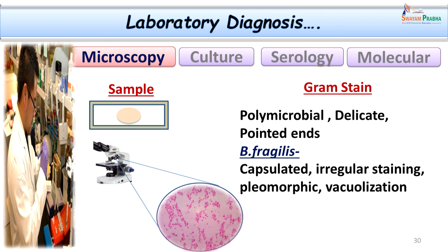After sample collection and transport, the sample is first subjected to microscopy in the laboratory. Microscopy forms level 1 identification of anaerobes. The sample is smeared onto a glass slide and stained by Gram stain. The Gram stain may show polymicrobial organisms — gram-positives, gram-negatives, cocci, and bacilli — probably due to mixed infections. The organisms could be delicate with pointed ends, pleomorphic, capsulated as in Bacteroides fragilis, very tiny, coccobacillary, or longer forms with irregular staining and vacuolization, indicating non-spore forming anaerobic bacteria.